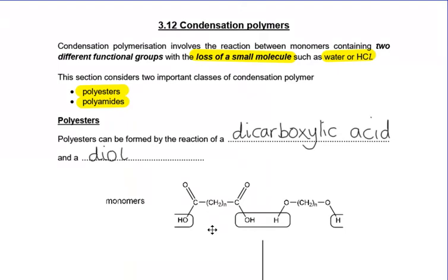So we've got two carboxylic acid groups - a dicarboxylic acid - and in the alcohol we've got two alcohol groups, and we're going to react those two together and lose a small molecule. You can see here that we've highlighted where there is an OH and an H that are going to condense out. We're going to form our polymer chain between these two, and then in the next one the alcohol will lose the H and the carboxylic acid is going to lose the OH. That's going to continue all the way down the chain. When we remove this water molecule, we're going to form a bond between this C and this O - those two are going to come together and that's going to be our ester bond.